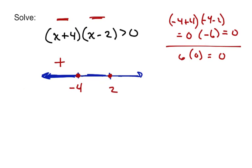Moving on to the next interval, from negative 4 to 2, pick something in there like 0. 0 plus 4 is positive, and 0 minus 2 is negative. A positive number times a negative number is a negative number. Finishing off by looking at the last interval, pick something ridiculously positive like positive a billion. Positive a billion plus 4 is still positive, and positive a billion minus 2 is positive. So this expression would be a positive number times a positive number, which is positive.